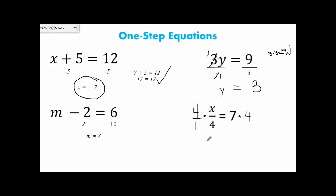What this gives me here is 4x because we do 4 times x and 1 times 4, so 4x over 4 equals 28. 4 divided by 4 is 1, where they cancel each other out. This just leaves me with x equals 28.